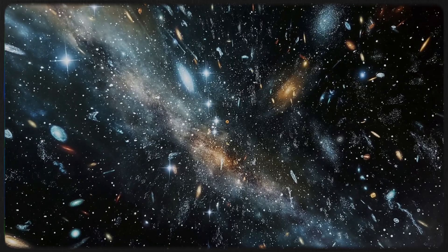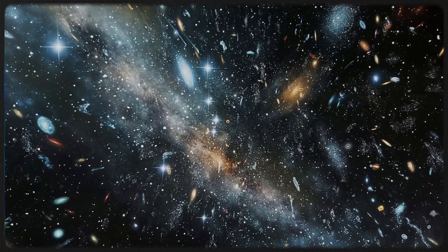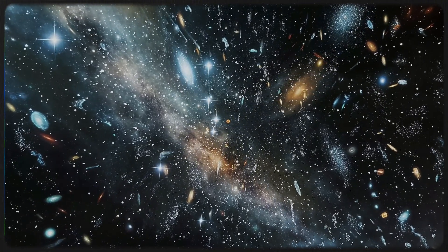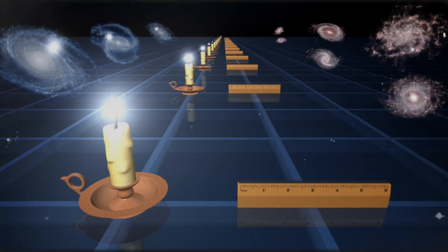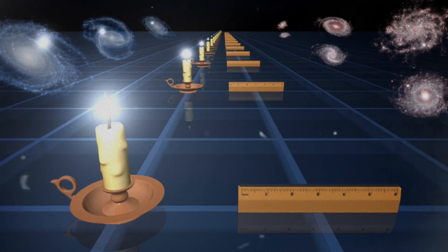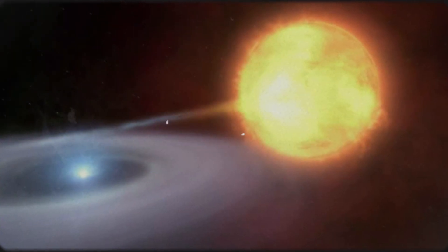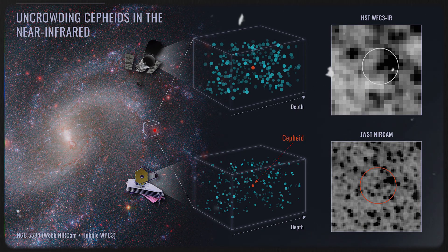Webb's focus on these critical celestial objects was designed to refine the cosmic distance scale, one of the most fundamental aspects of understanding the universe. By observing the pulsating Cepheid variables, which serve as reliable standard candles for measuring distances, and the explosive Type 1a supernovae, Webb aimed to fine-tune the calibration of this scale and compare the results with those obtained by its predecessor, the Hubble Space Telescope.